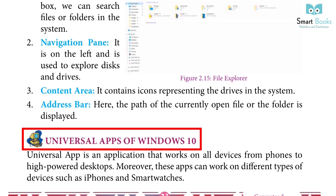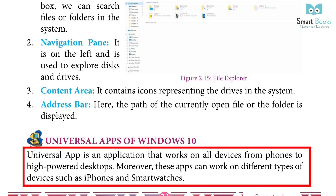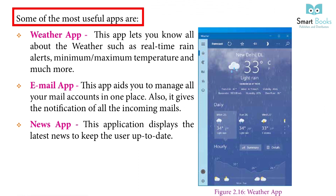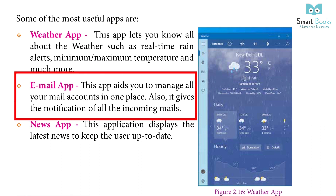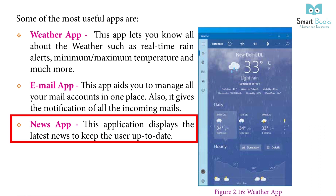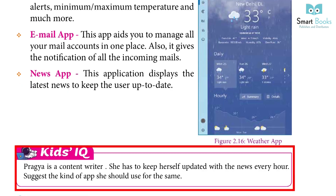Universal Apps of Windows 10: A universal app is an application that works on all devices from phones to high-powered desktops. These apps can work on different types of devices such as iPhones and smartwatches. Some of the most useful apps are: Weather app — lets you know about the weather such as real-time rain alerts, minimum/maximum temperature, and much more. Email app — helps you manage all your mail accounts in one place and keeps notifications of all incoming mails. News app — displays the latest news to keep the user up to date. Kids IQ: Pragya is a content writer. She has to keep herself updated with the news every hour. The News app is the kind of app she should use for this purpose.